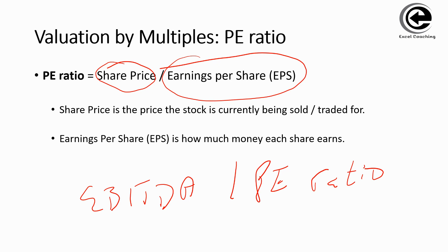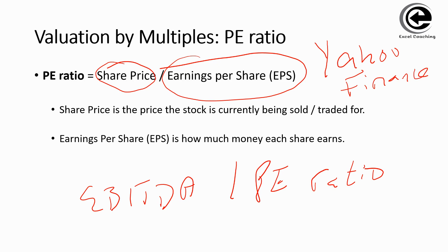Share price is effectively the price of a stock currently being sold or traded for — that's the price you can currently get for a particular stock. Earnings per share is basically how much money each share earns. Both of these measures — share price and earnings per share — are readily available for public companies in databases like Yahoo Finance, which is a good source for this financial information. You can also go to the stock exchange website for your particular country.